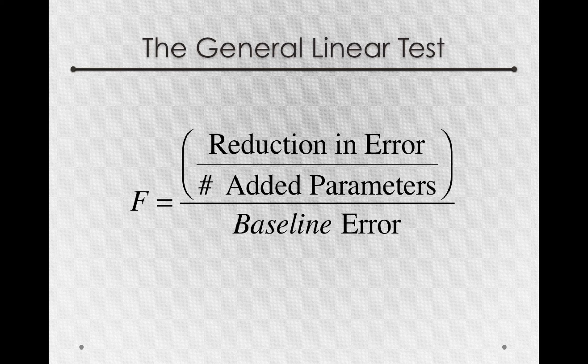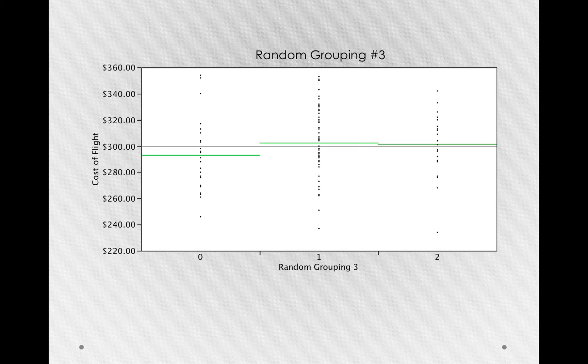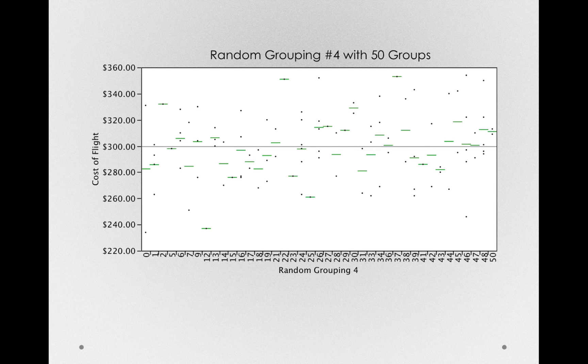Now, this number of parameters part is sort of important. If we have a random grouping with three groups, we'll certainly reduce error just a little bit by random chance. If we have 50 random groupings, we'll certainly reduce error by random chance.